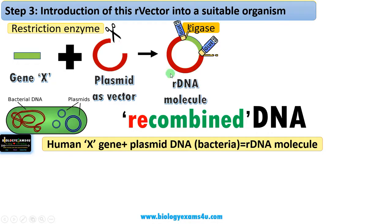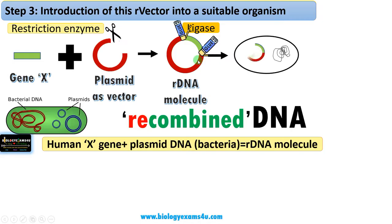Step 3 is introduction of this recombinant vector into a suitable organism, like a bacterium. We have transformed this recombinant vector into a bacterium by different methods like electroporation, micro-injection, etc.